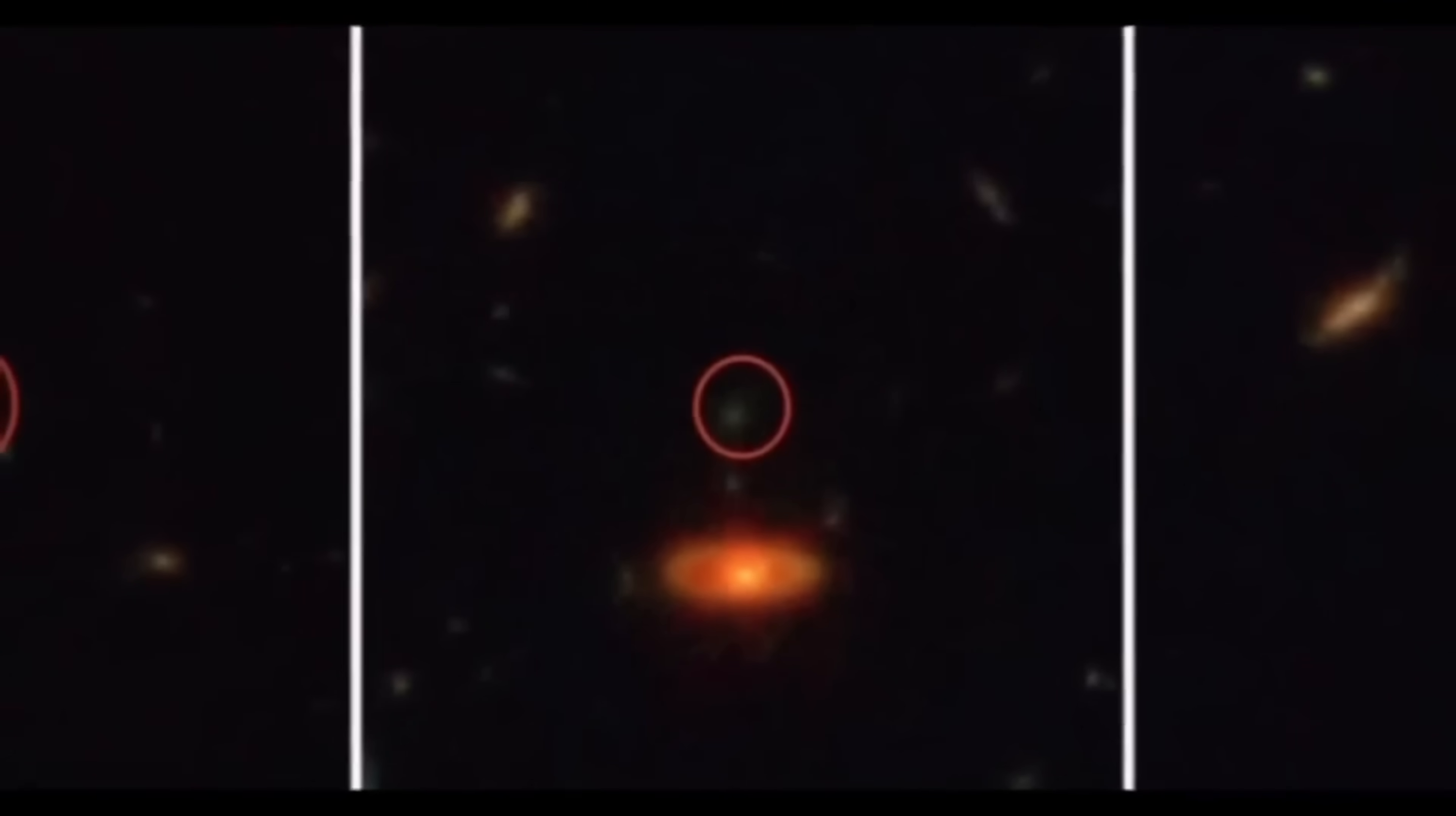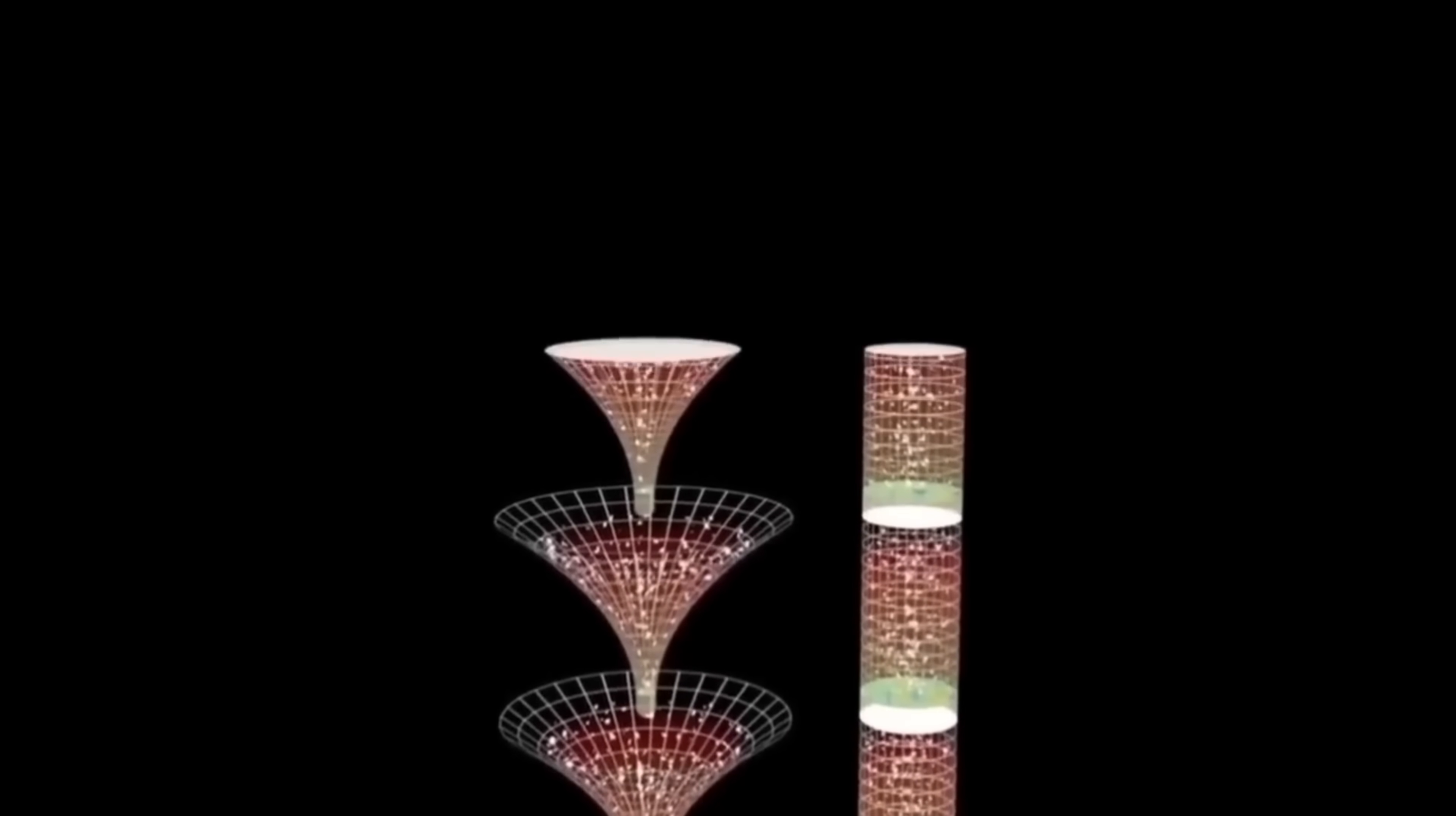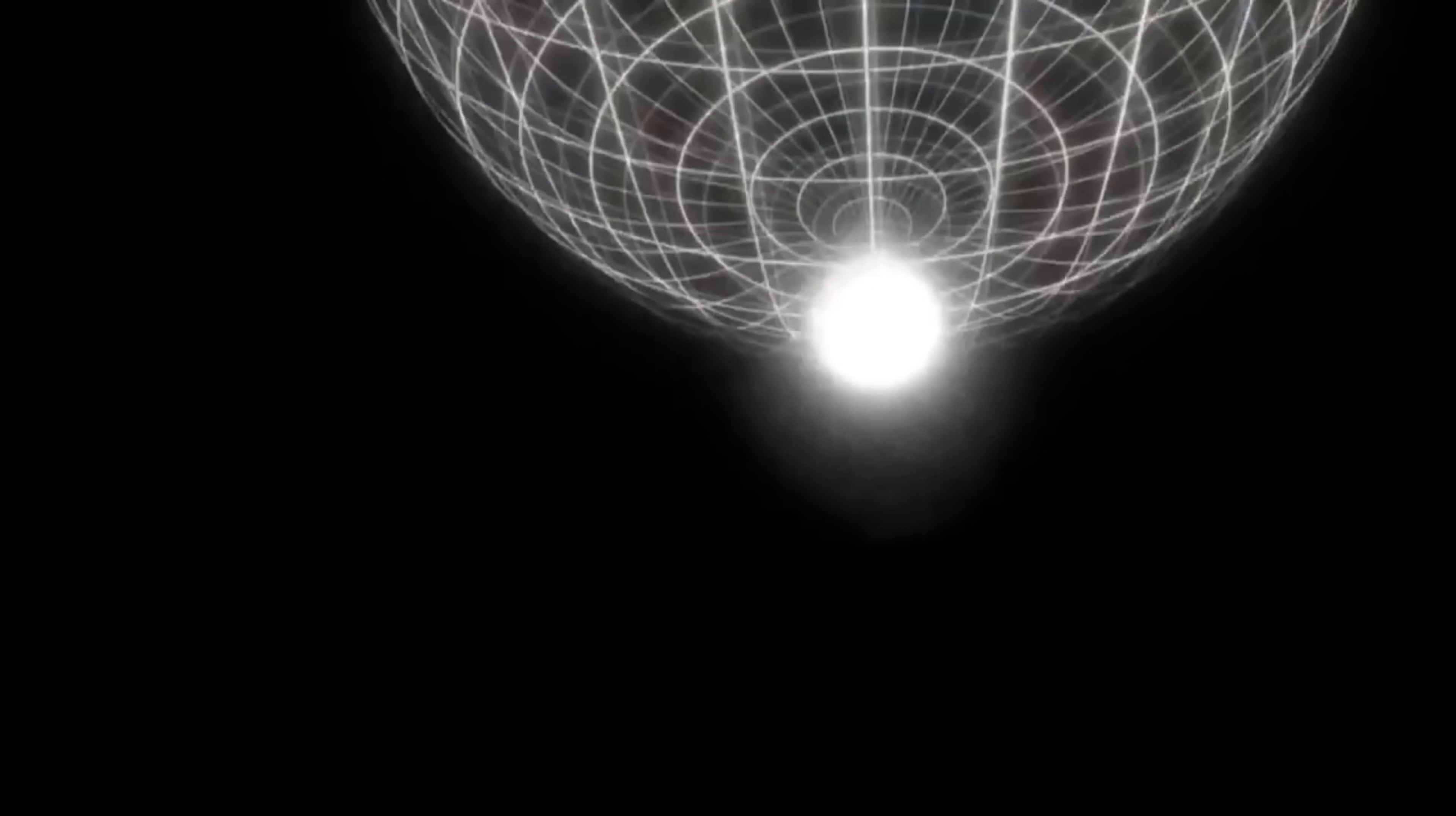Nobel Prize winning researchers believe this could be the strongest evidence yet that another universe existed before ours. Roger Penrose, a famous physicist, once predicted that our universe might not be the first. He suggested that the universe works in cycles, where one universe slowly fades away and another is born. In his view, the radiation left behind by black holes in the old universe carries information forward, becoming part of the next one. In this picture, the Big Bang wasn't really the beginning of everything, but just the start of our current cycle.